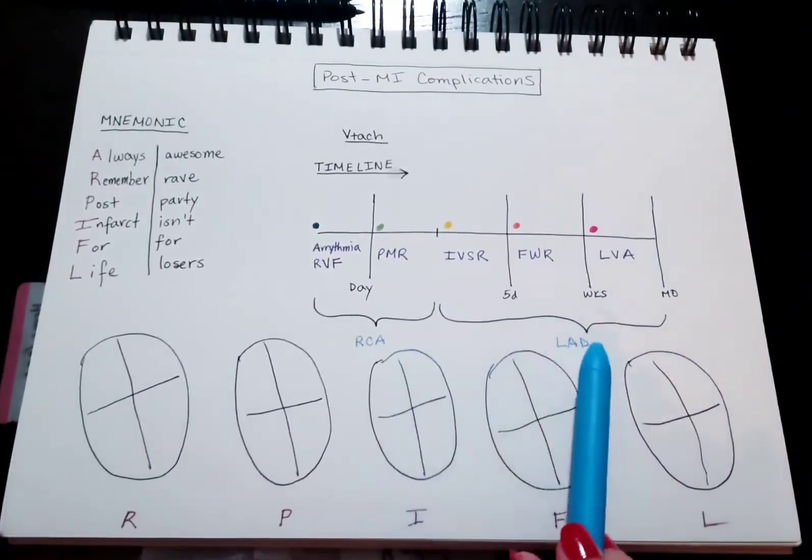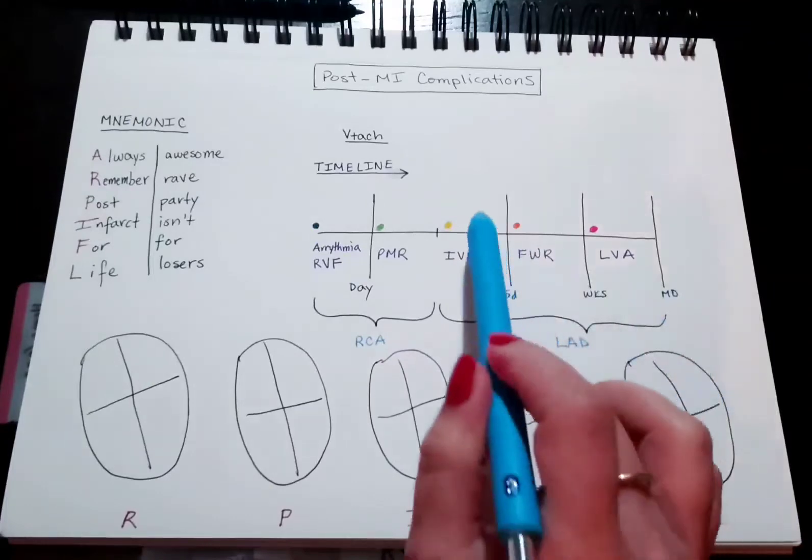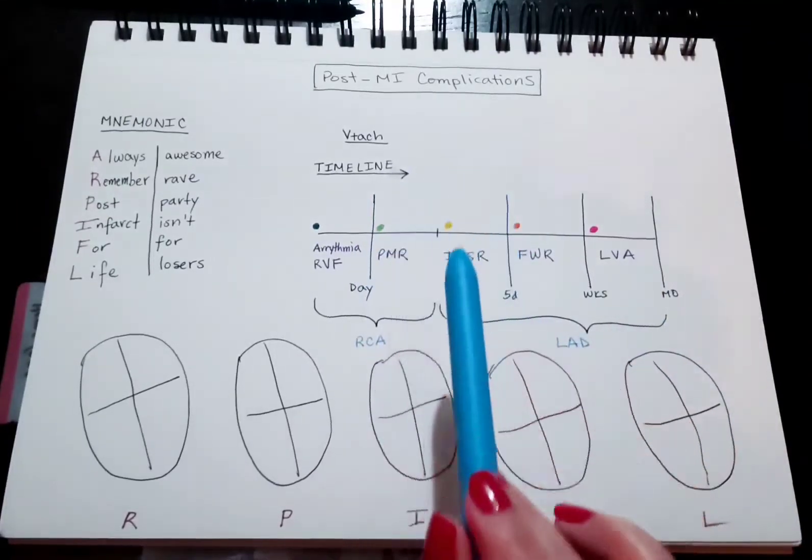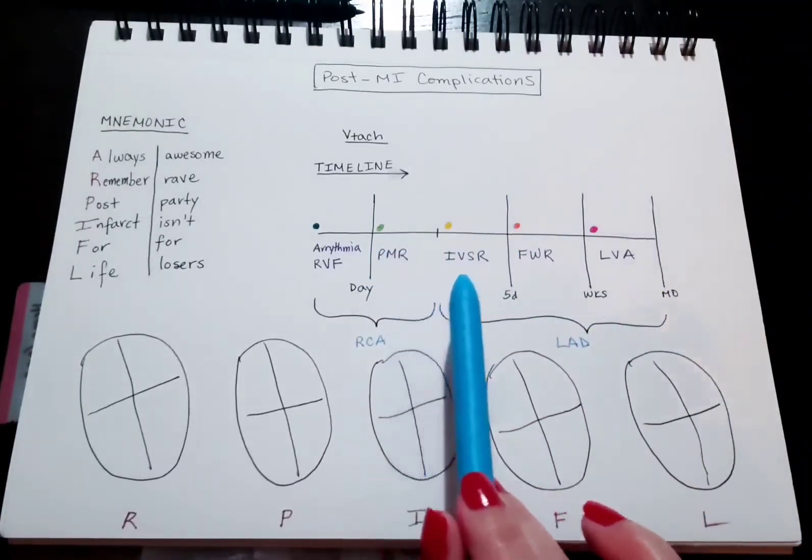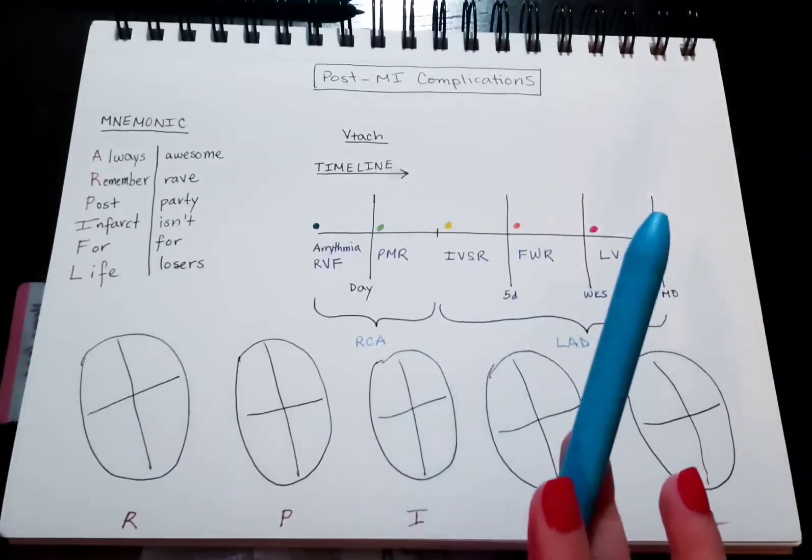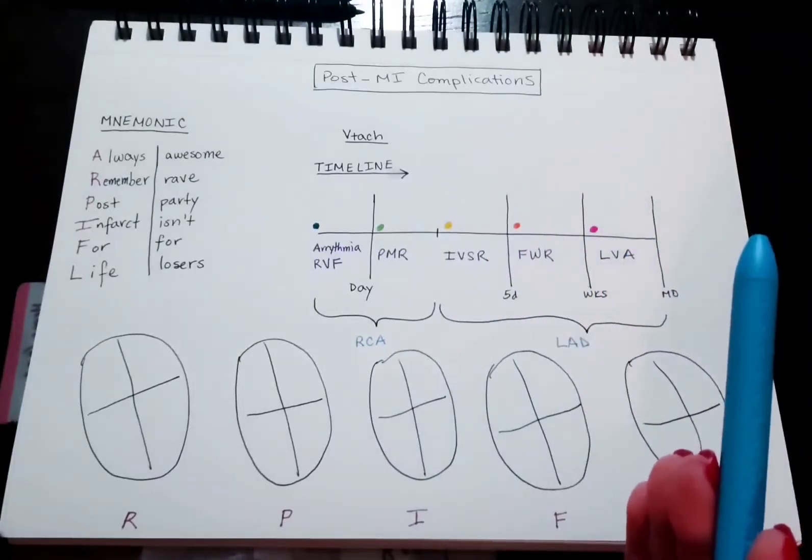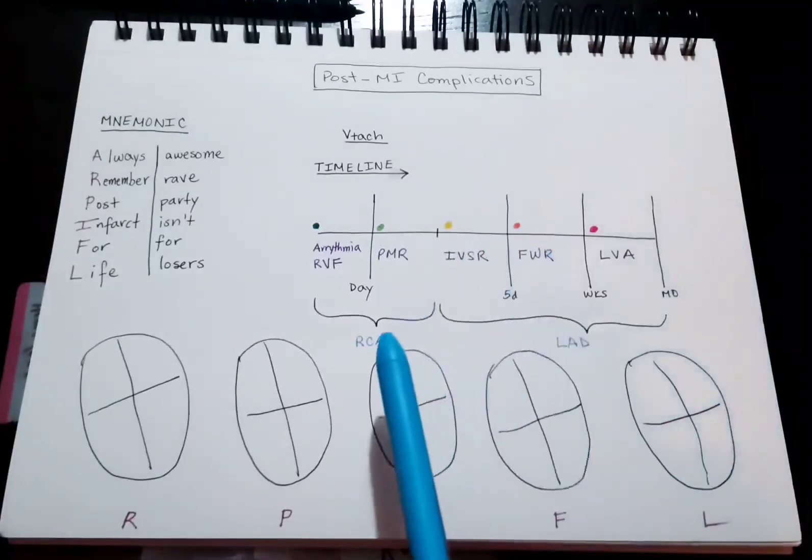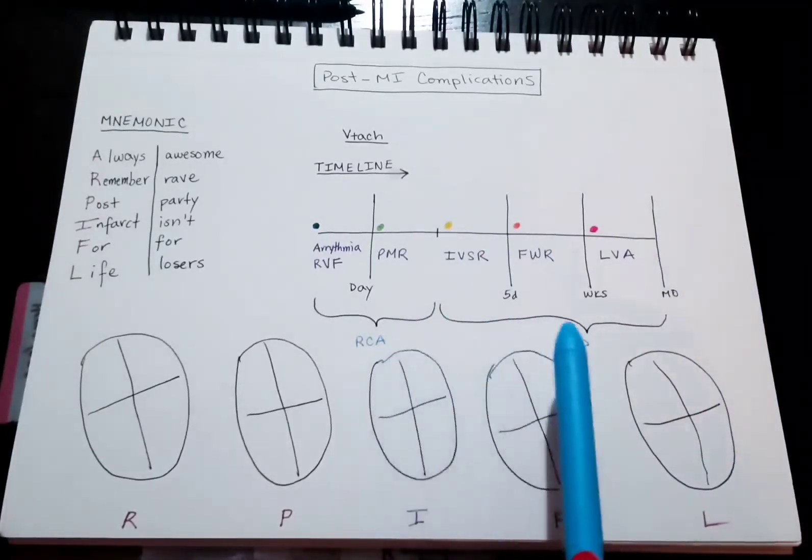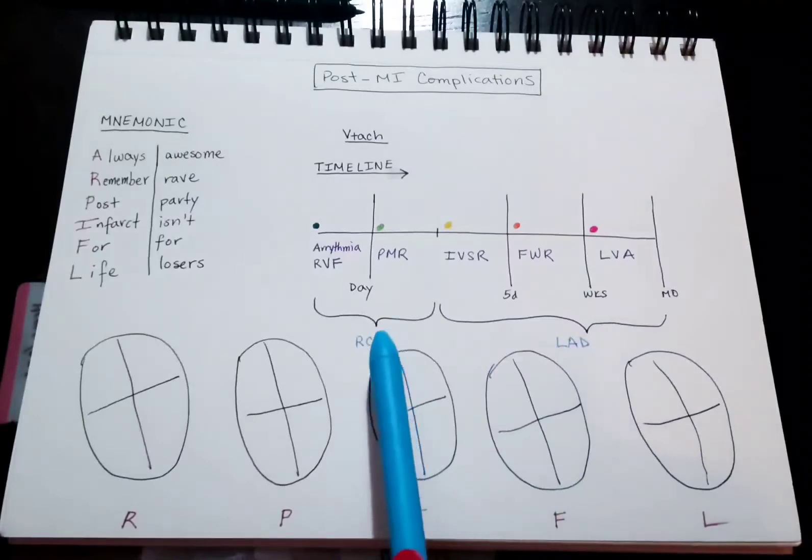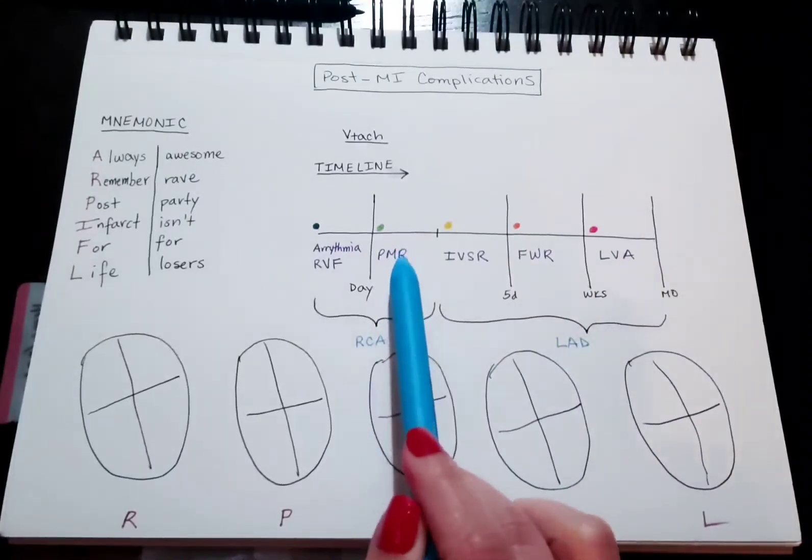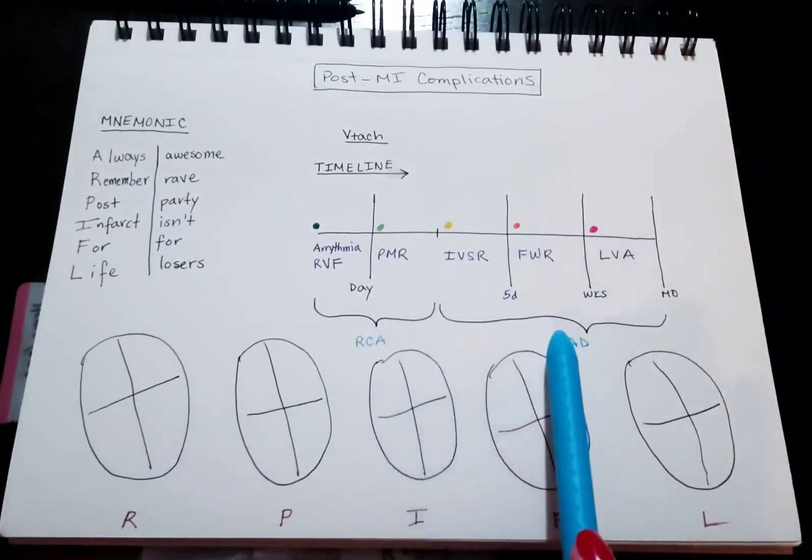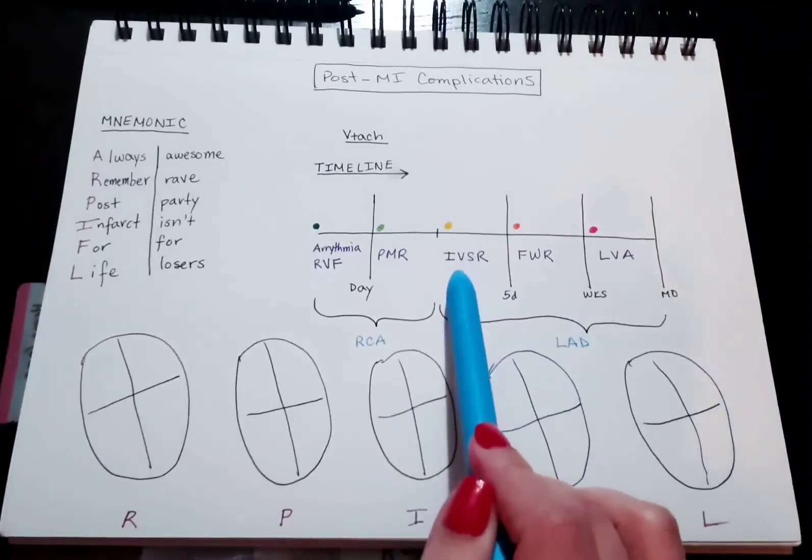If you're wondering why these are important, in short, it's mostly important for these two, since they're both between three to five days. Oftentimes, a very easy way to distinguish them, sometimes even the only way to distinguish them, is through which vessel was involved. So if it was right coronary artery, it's papillary muscle rupture. LAD, interventricular septal rupture.